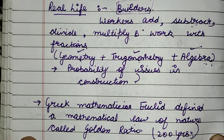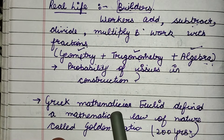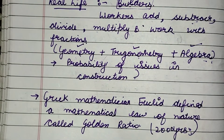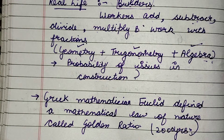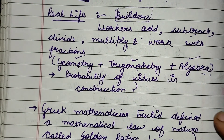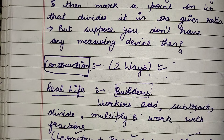Let us understand where the concept of construction came from. Earlier, when people did not know about formal construction, they designed buildings based on assumptions, and many of those buildings are still valid today. After that, the Greek mathematician Euclid gave a mathematical formula known as the golden ratio, about 2000 years ago. That formula is still used in building construction today. That was a brief introduction to the use and history of construction. Now let's come back to the mathematics part in your NCERT class 10th book.